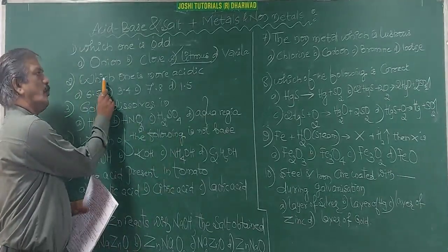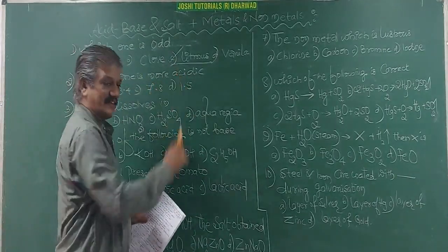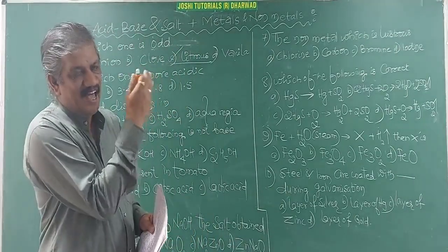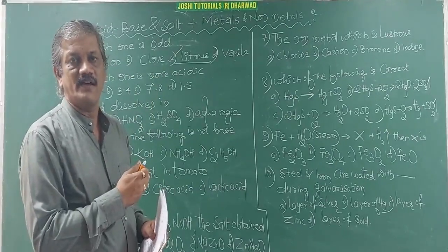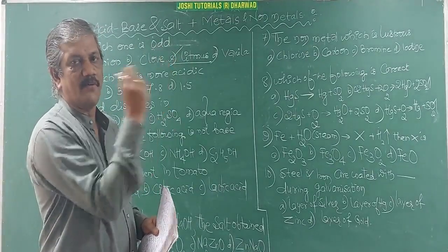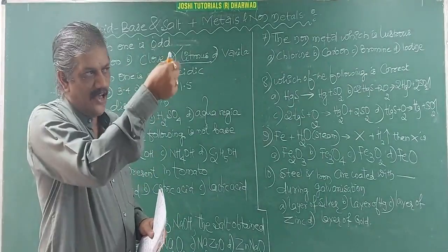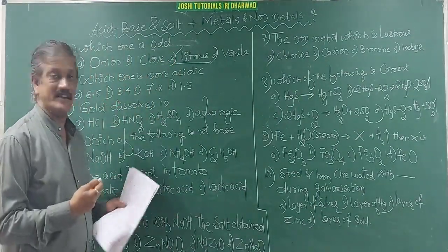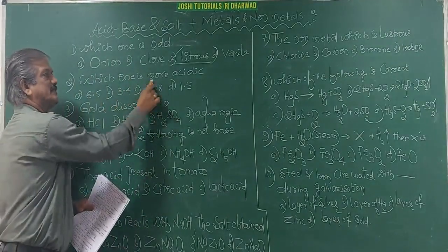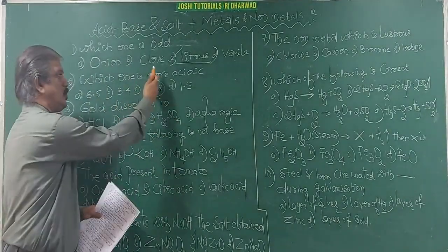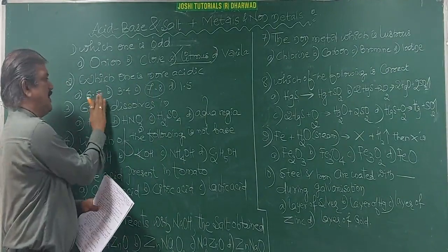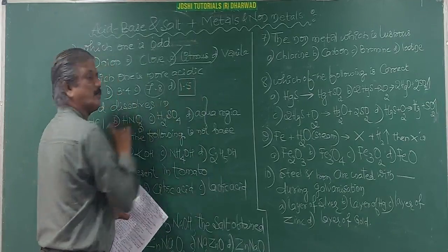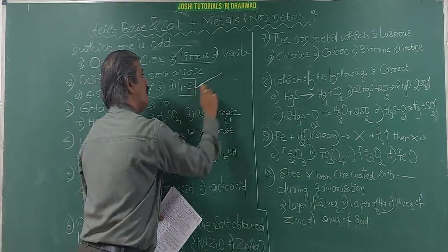See the second question: which one is more acidic? More acidic means the number should be less, less than seven. If you take six and five, more acidic is five. So as the number is the least, it is more acidic. Here it is basic, no answer. Here if you compare, it is the answer, but here the least one is 1.5. You have to go for this.